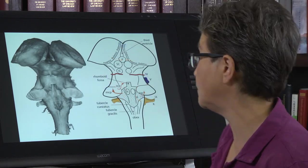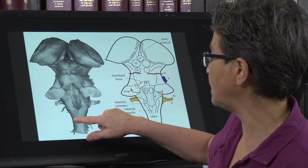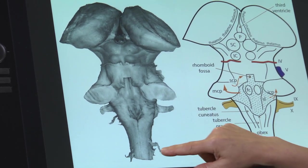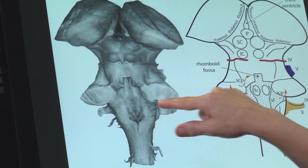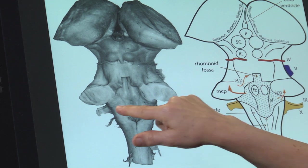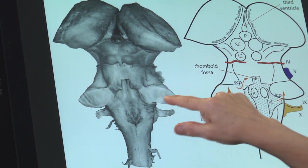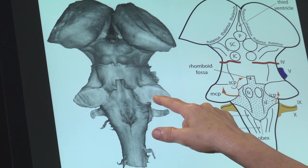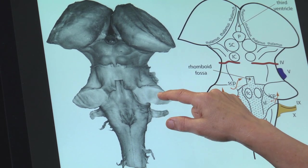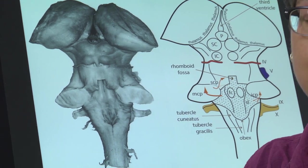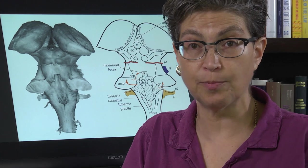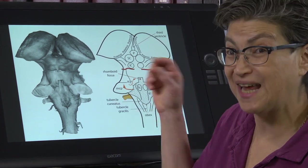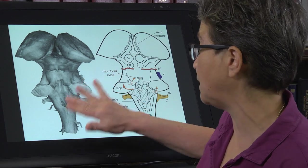Now we're looking at the dorsal surface of the brainstem. The boundary between the spinal cord and the medulla is less clear here, but the boundary between the medulla and the pons is still clear because you see these two cut surfaces. These cut surfaces are where we took the cerebellum off — they are called cerebellar peduncles. There are three different tracks within the cerebellar peduncles, and the only way to get in or out of the cerebellum is to go through these peduncles. They are the attachment of the cerebellum to the pons.